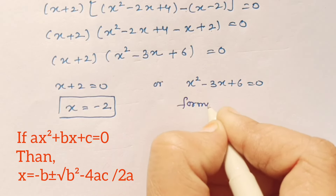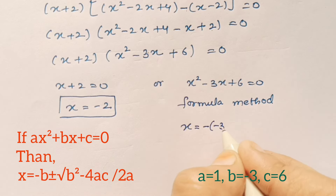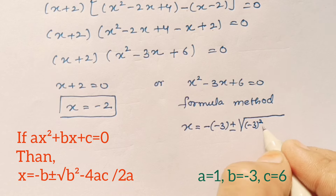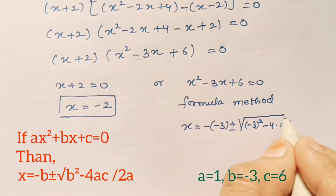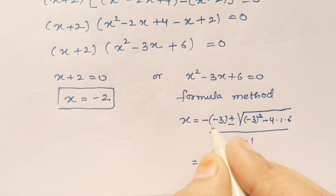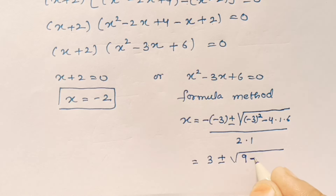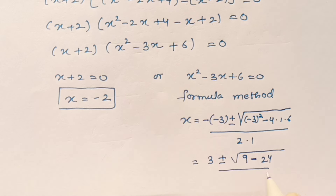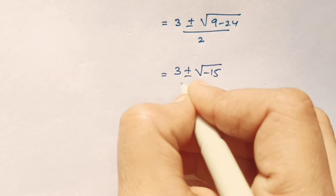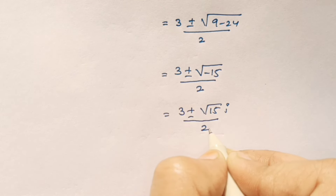The second factor x squared minus 3x plus 6 is a quadratic equation, so we solve it by the quadratic formula: x equals minus b plus or minus the square root of b squared minus 4ac, all over 2a. Therefore x equals minus of minus 3, plus or minus the square root of minus 3 squared minus 4 times 1 times 6, all over 2. This gives x equals 3 plus or minus the square root of 9 minus 24, divided by 2, which is 3 plus or minus the square root of minus 15, divided by 2. Since the square root of a negative number is imaginary, we write this as 3 plus or minus root 15 i, divided by 2.